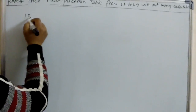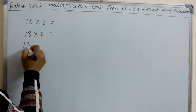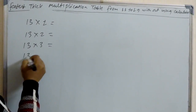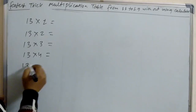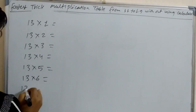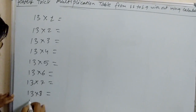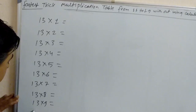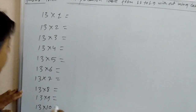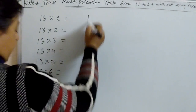Now I will teach you the table of 13. See here: 13×1, 13×2, 13×3, 13×4, 13×5, 13×6, 13×7, 13×8, 13×9, 13×10. For 13, you have to know the table of 3. First write the table of 3.